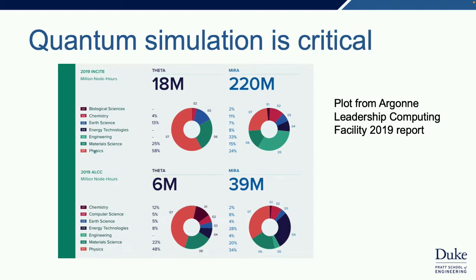Why am I interested in quantum simulation? It's really critical for understanding things like chemistry, material science, engineering, and nuclear physics. If you look at any large computational center—for example, from the Argonne Leadership Computing Report—you see that a broad fraction of the biggest computers in the world are spent running quantum simulations. So if we could build an accelerator that speeds that up, life would be good.